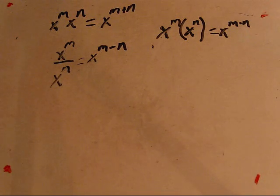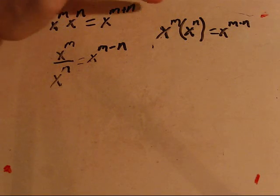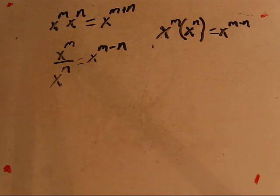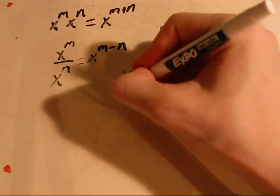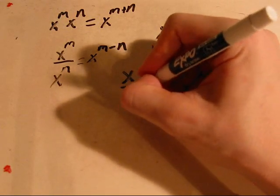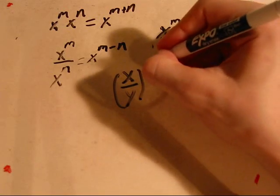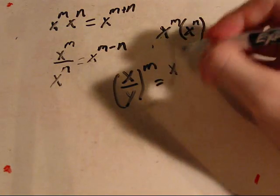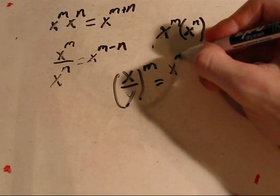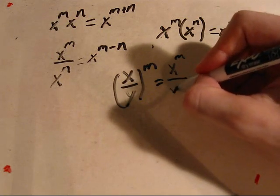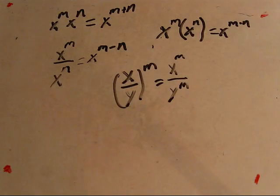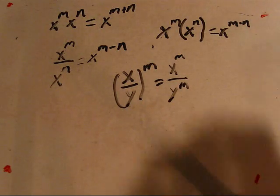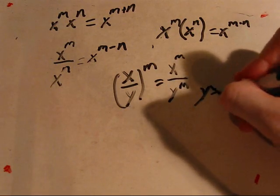And as shown before, you can flip that over if any of the exponents are negative. If you've got a variable over a variable to an exponent, it becomes the first base to the exponent over the second variable to the same exponent, as long as this second base is not equal to zero.